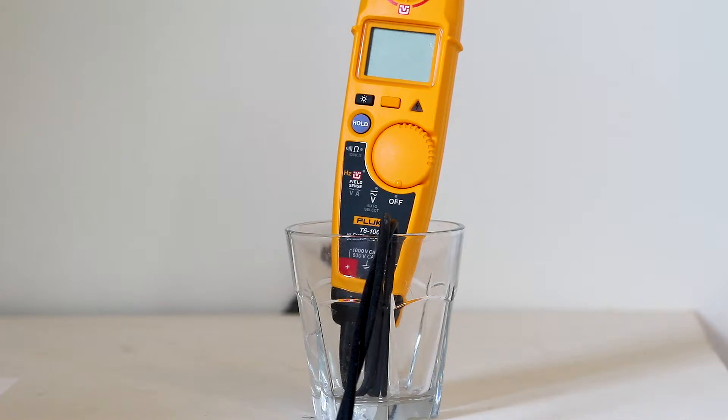The Fluke T6-1000 electrical tester resembles a clamp-on ammeter. Both are non-contact instruments, but rather than sensing a magnetic field, the T6-1000 senses voltage or current by means of capacitive coupling to ground.